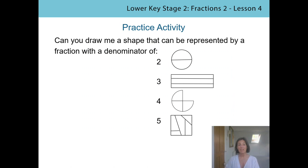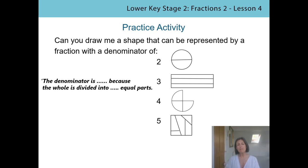Here are the shapes that he drew. Look closely at them and you might want to use this stem sentence that we were using in the last lesson to check whether or not he's drawn the right shape. Let's have a look at the first one and say the sentence together: the denominator is two because the whole is divided into two equal parts. There's definitely two parts, they're definitely equal. So well done, Mr Ted, that first one is right.